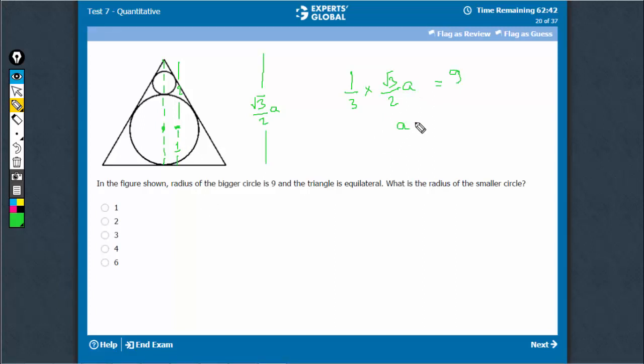which is 9. So, a is equal to 18 root 3. Side of the triangle is 18 root 3.